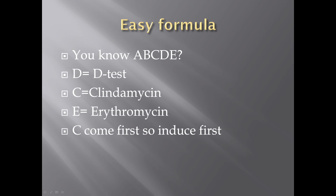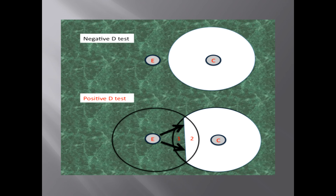Let me explain how you perform the test. You take the erythromycin disc and the clindamycin disc. If you find resistance to erythromycin and sensitivity to clindamycin with no D-formation, that is considered a negative D-test — you don't need to worry about that.